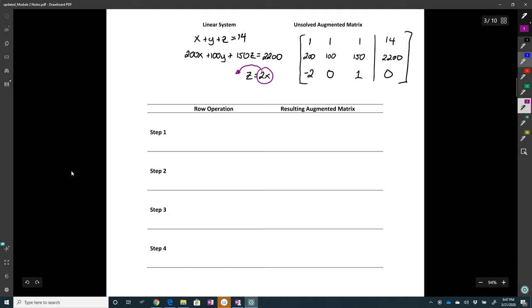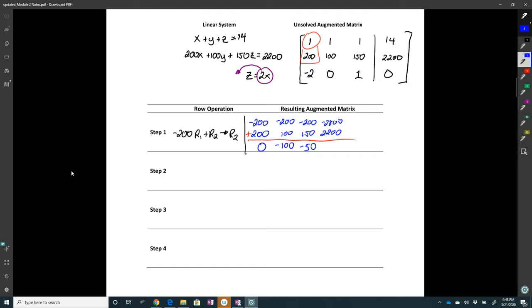So the first step here, notice that we already have a 1 in the upper left corner. The next step is to turn that 200 into a 0. I do that by doing the opposite. So negative 200 row 1 plus row 2 should give me my new row 2. So that's going to be negative 200, negative 200, negative 200, and then 14 times negative 200 is negative 2,800. And then I have underneath 200, 100, 150, 2,200. I can add those up. And that gives me 0, negative 100, negative 50, and 2,800 minus is negative 600.